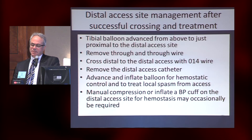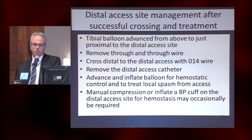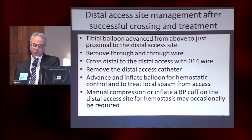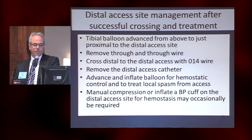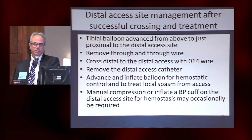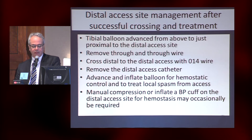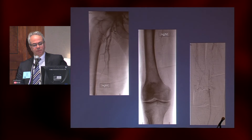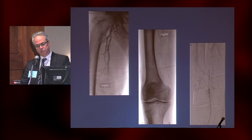Distal access site management is pretty easy, but it's important to get a balloon down — I always balloon the distal angioplasty or access site. After you've done your work from above, pull the wire through, pass an 014 wire distal to your access catheter distally, and put a balloon up in that. You can inflate a blood pressure cuff briefly for control if needed.